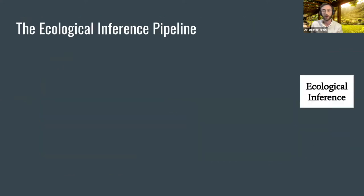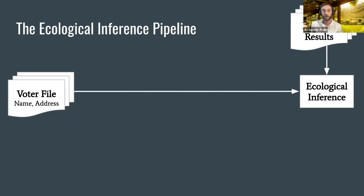In cases like East Ramapo, we want to run ecological inference, but first we have to do some work. We need to gather election results and figure out the race of people who showed up to vote. It's easy enough to get election data, and to find out who voted we can go to voter files — data sets maintained by states and counties containing lists of every voter in that region, typically including names and addresses. Most of the time, voter files don't have information about voters' race, which we need to conduct ecological inference, so we have to estimate their race first.